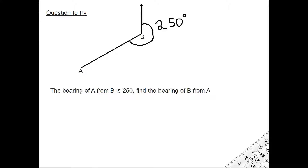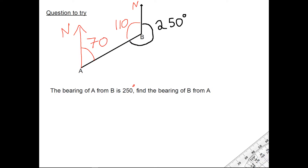Here's a question for you to try — please pause the video now and have a go. When you're ready for the answer, press play. Here is the answer: the bearing of A from B is 250 degrees. To find the bearing of B from A, draw a north arrow on A. If the reflex angle is 250, the interior angle is 360 take away 250, which is 110. That angle needs to add up with the co-interior angle to 180, so that's 70. Therefore the bearing of B from A is 070 degrees.